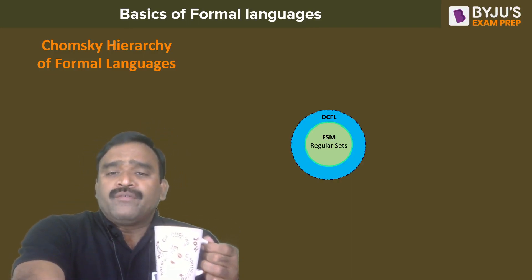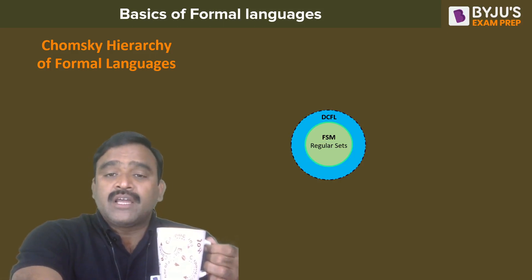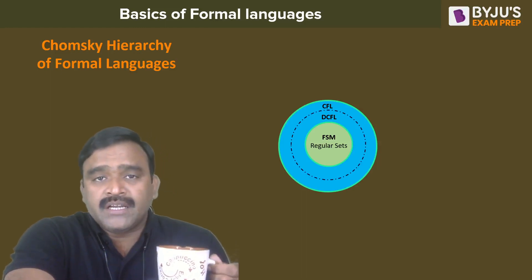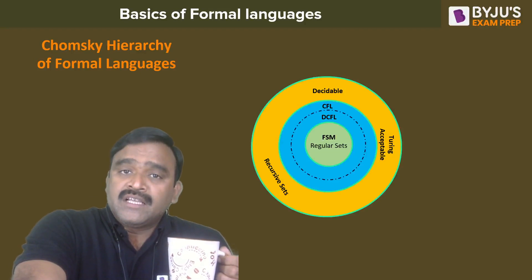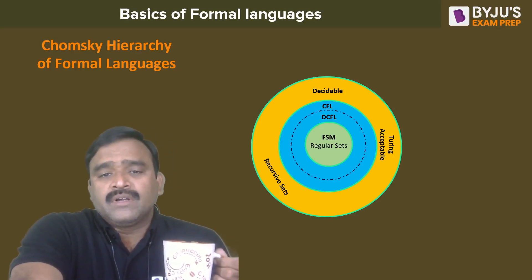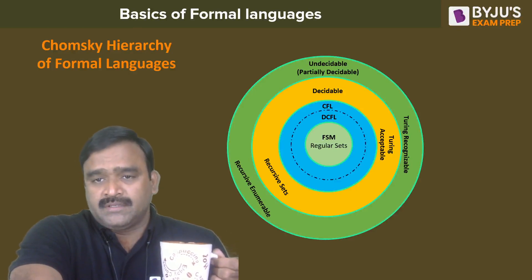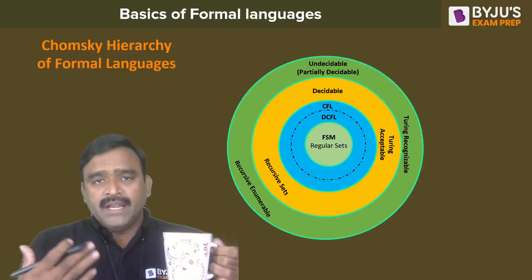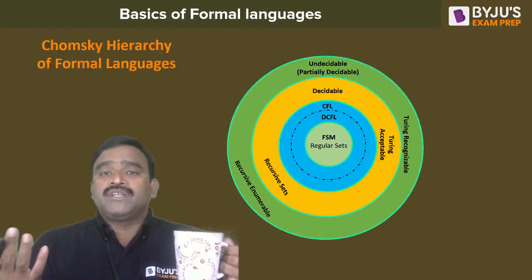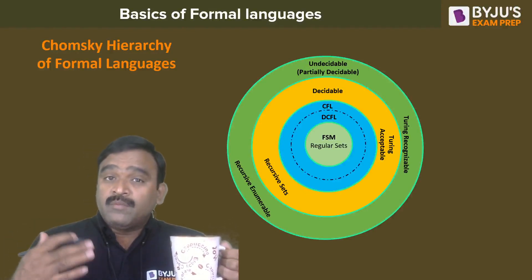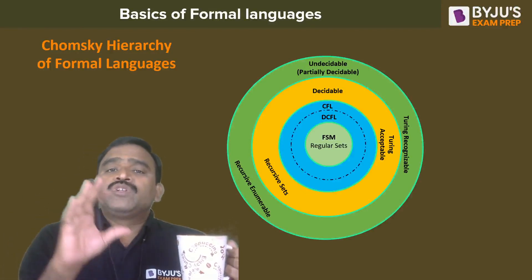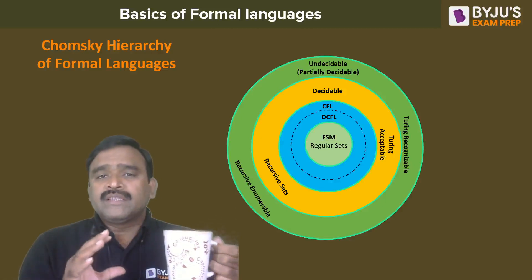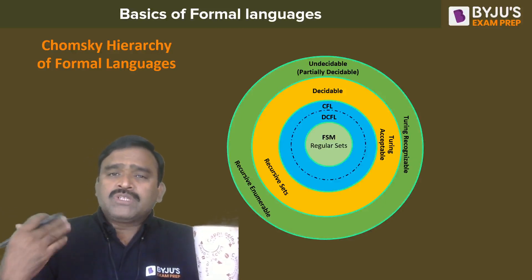Regular languages are Type 3 languages recognized by finite state machines. DCFLs are recognized by deterministic pushdown automata, CFLs by pushdown automata, and recursive and recursively enumerable sets are decided by the Turing machine. There are partially decidable and completely decidable languages. By studying the languages' concepts, their grammatical representation, and machine counterparts, you can visualize the relation between languages.